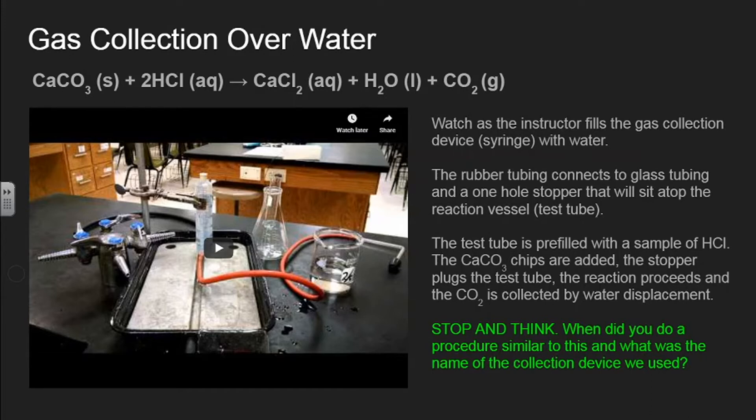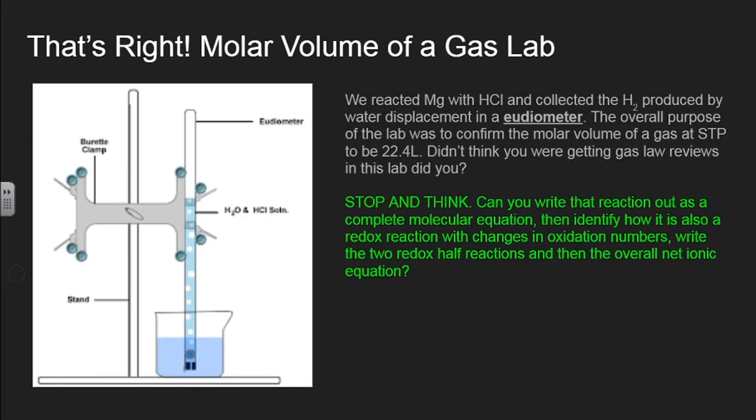Here's another stop and think. When did you do a procedure similar to this? And what was the name of the gas collection device that we used? We did not use a stopper syringe, we used something else. Pause the video and think about where you've seen something like this before. Did you remember that it was the molar volume of a gas lab? Where we did a reaction between magnesium and hydrochloric acid and collected the hydrogen gas produced in a eudiometer.